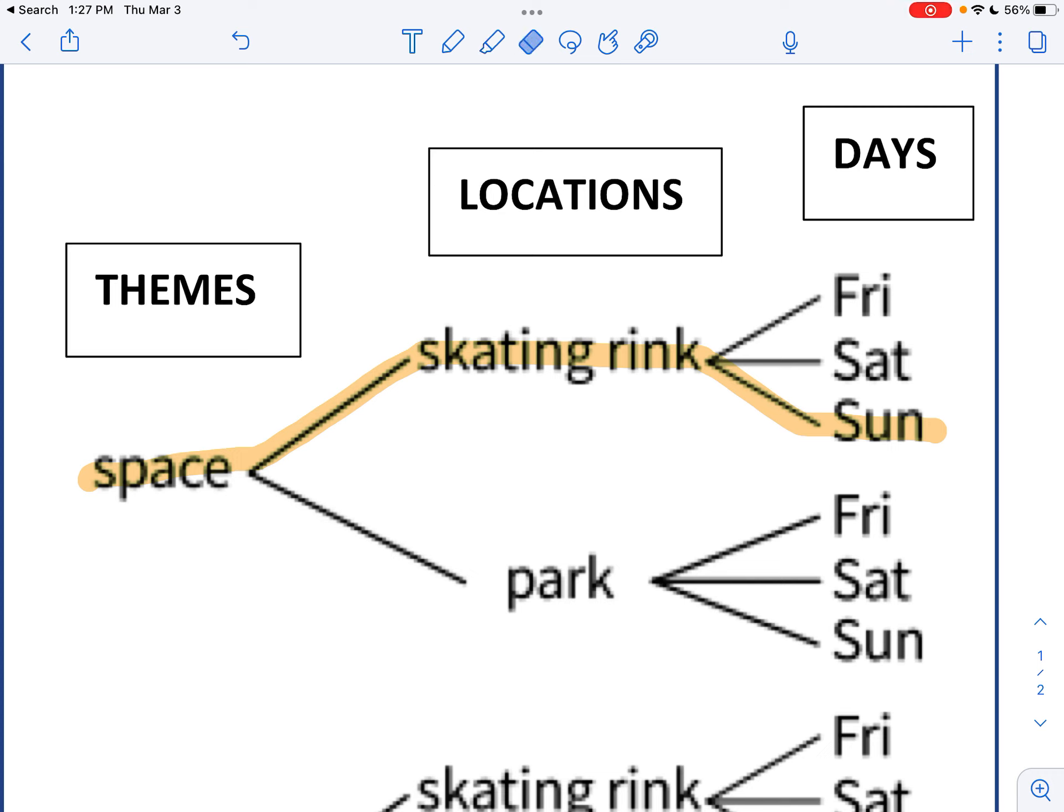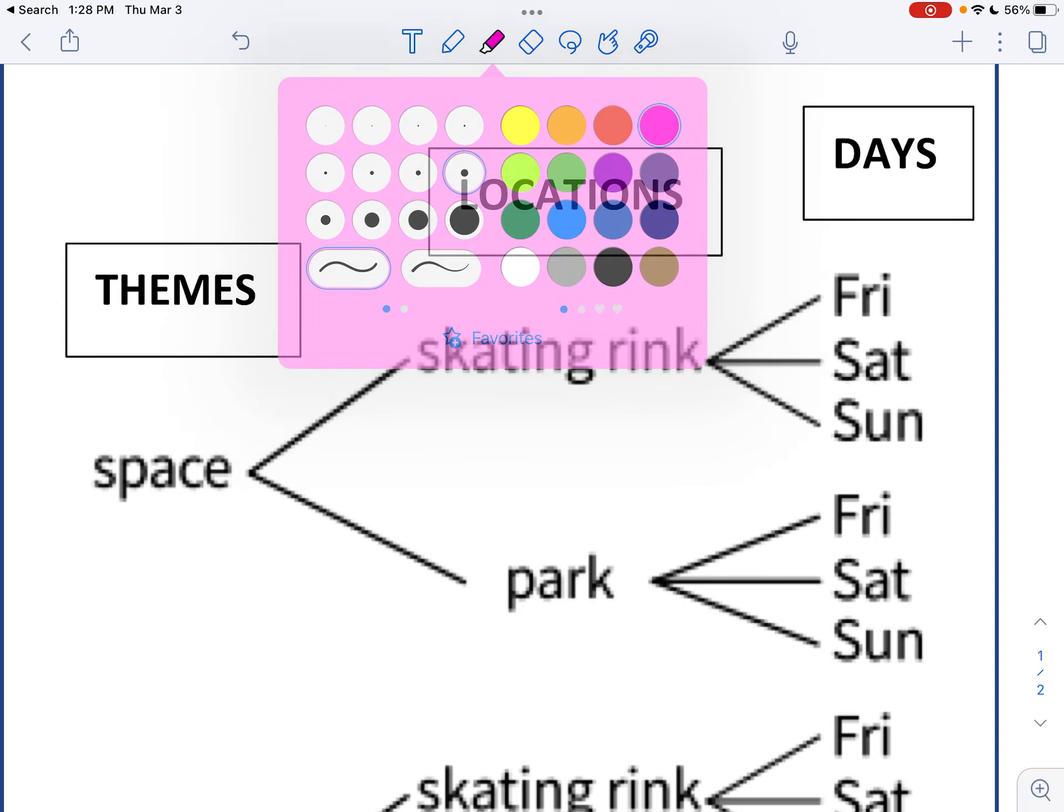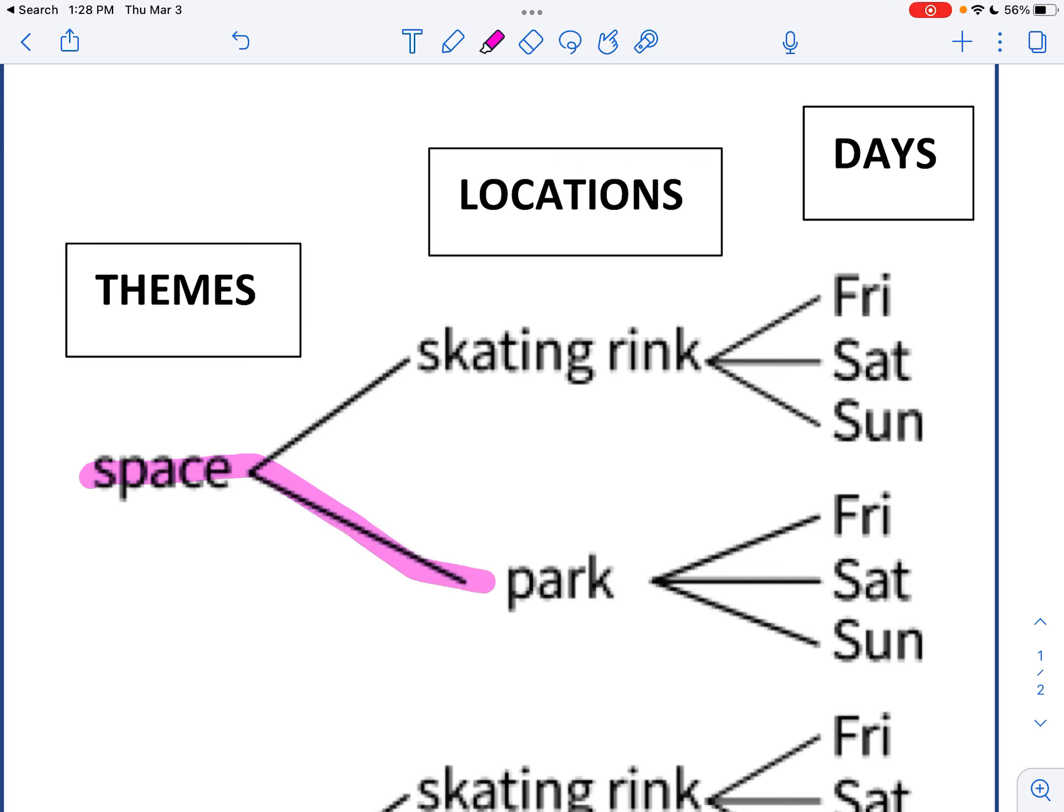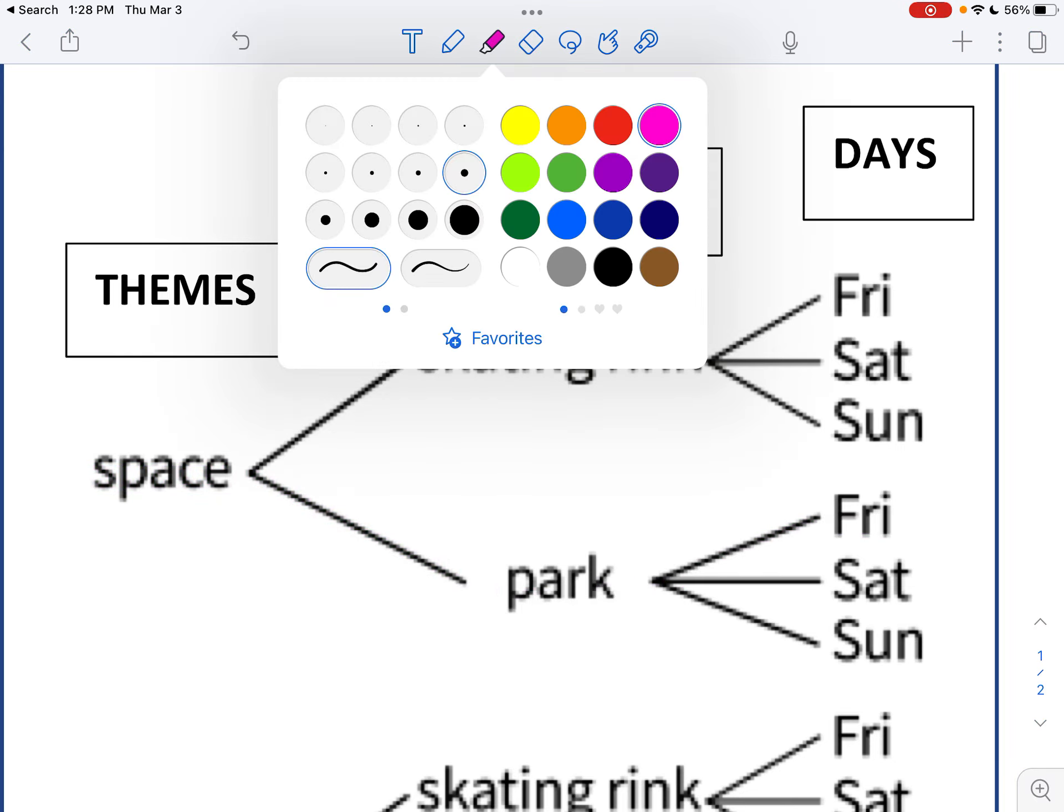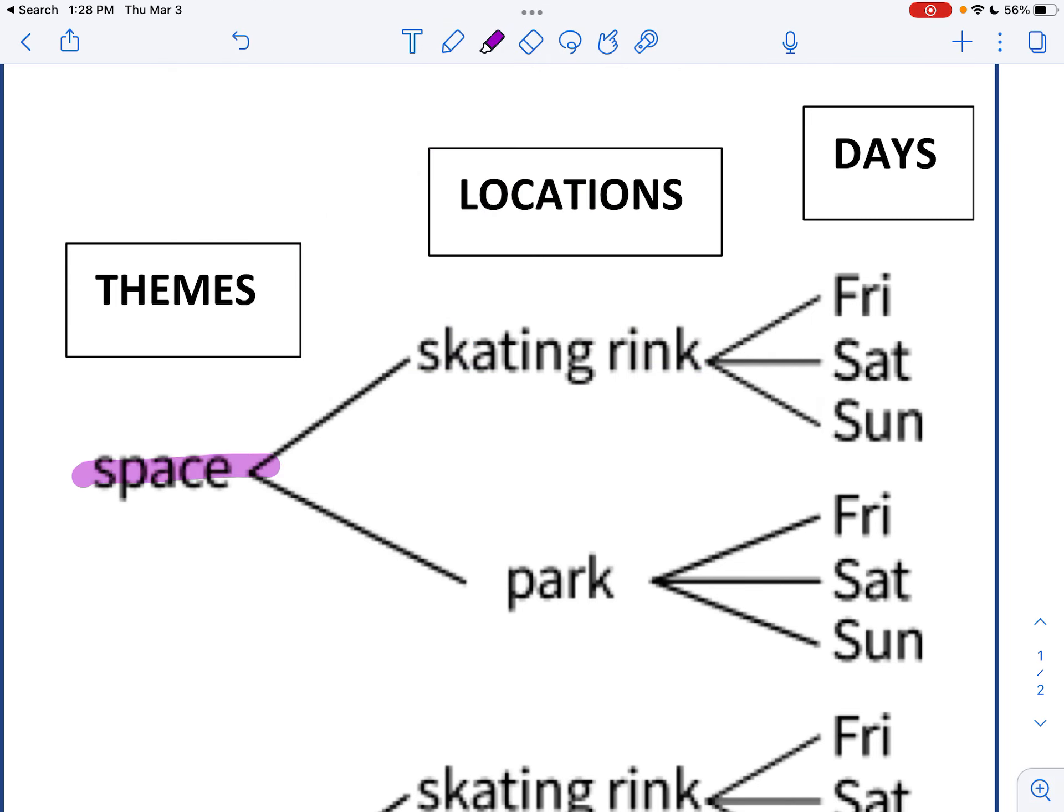If I wanted another possibility, I'm going to get rid of the highlight again, grab a different color. Is a space theme at the park. That's different, right? The first time it was space at the skating rink. Now it's space at the park, and we'll have it on a Friday. That's a different party, right? Another option could be, grab a different color again, a space theme at the skating rink on Saturday. It's a slightly different party. The first one was a space theme skating rink Sunday, right? So those three things together make a unique party.